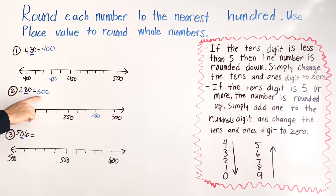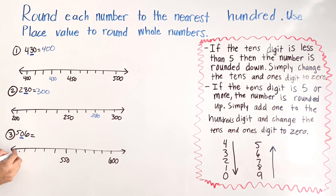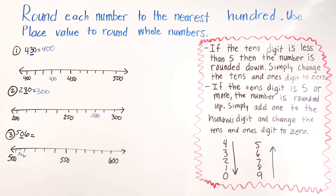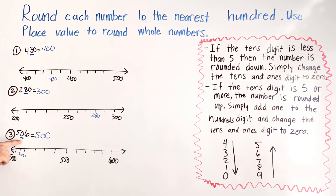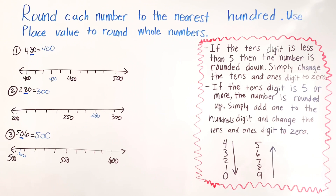For number three we have 506. On the number line we have 500, 510, and 506 is around here. Is it closer to 500 or closer to 600? We're closer to 500, so we round to 500. We also know the tens digit is zero, and if the tens digit is zero, one, two, three, or four we're rounding down — so that's why we rounded to 500.